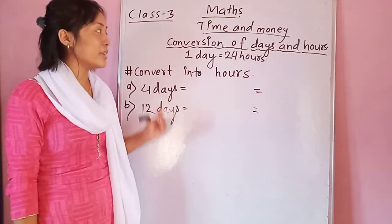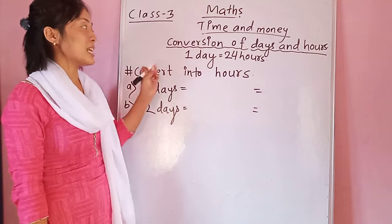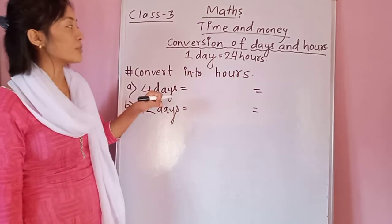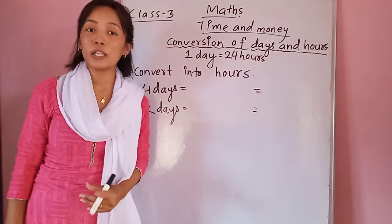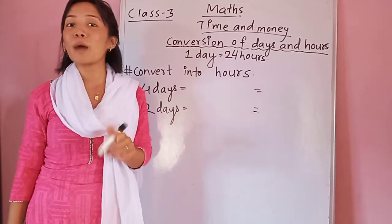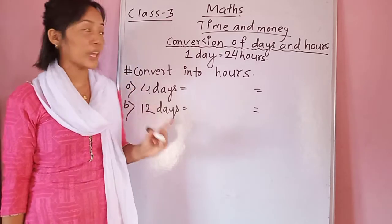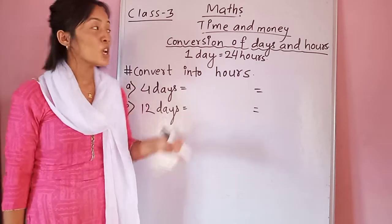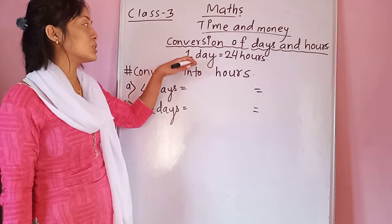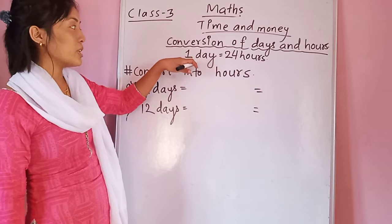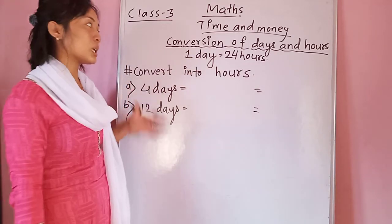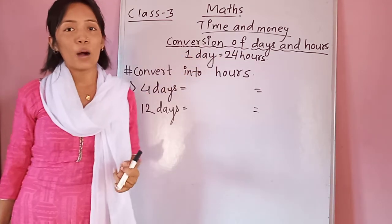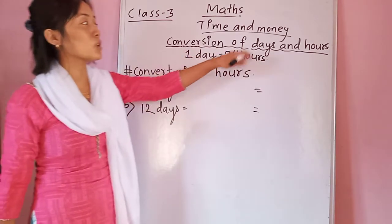So first of all, let me tell you about the relation between days and hours. Here at the top I have written: one day equals 24 hours. You have to learn it and keep it in your mind forever. It is also useful in daily life, not just for study.